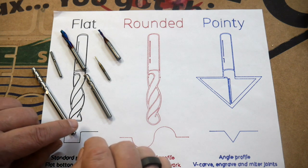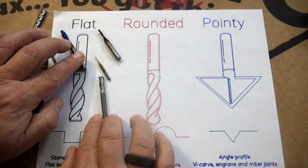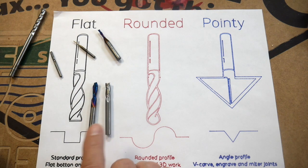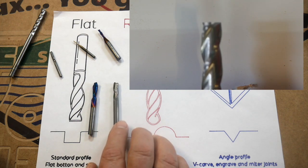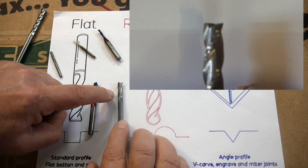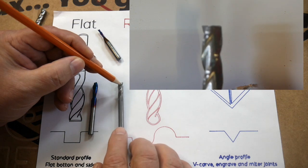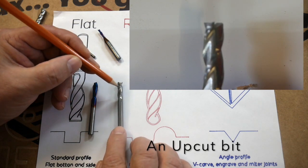Now one thing I want to show you is the difference between some of these bits. For example, these two—one of these is a bit for aluminum and acrylic, that's this one. You notice when I turn it like this, you'll see that that flute comes this way, right? So anything that's getting cut by this is getting pulled upwards.